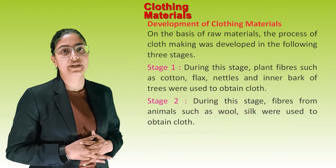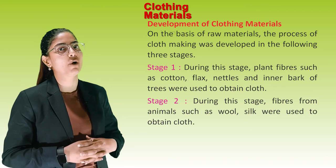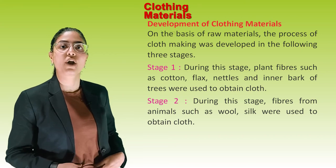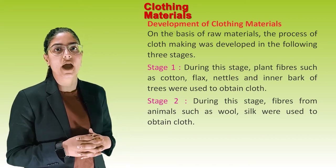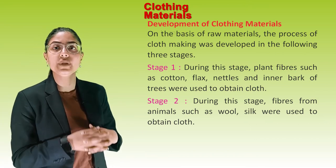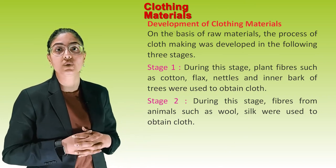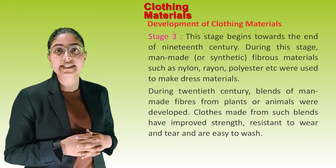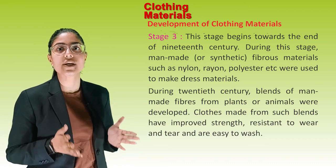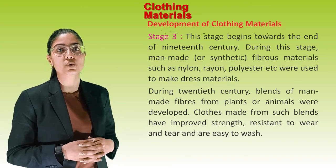Development of Clothing Materials: On the basis of raw materials, the process of cloth-making was developed in three stages. Stage 1: Plant fibres such as cotton, flax, nettles and inner bark of trees were used. Stage 2: Fibres from animals such as wool and silk were used. Stage 3: Beginning towards the end of the 19th century, man-made or synthetic fibrous materials such as nylon, rayon and polyester were used to make dress materials.